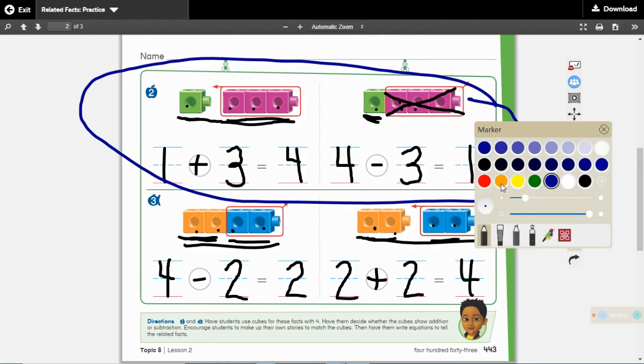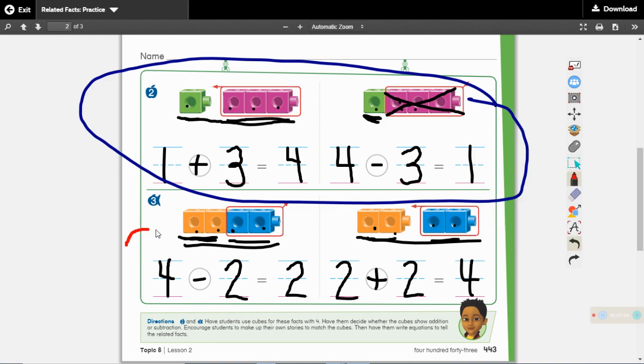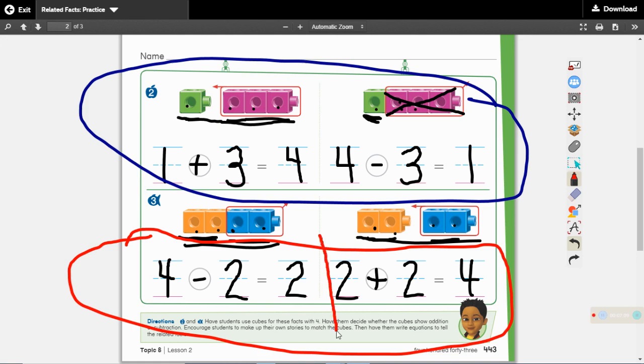Let's look down here, and I'm going to circle this group in red. What do you notice about those two problems? 4 minus 2 equals 2. 2 plus 2 equals 4. They both have one 4, and they both have two 2s.